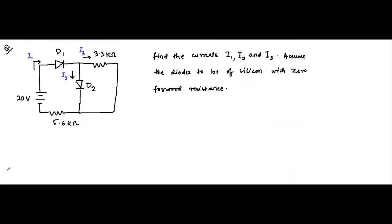Here we have another question on diode circuits. We have the circuit with diodes D1 and D2, which are silicon diodes with 0 forward resistance. We are asked to find the values of currents I1, I2, and I3. First we have to find the state of the diodes. After finding out their state, we will replace them with their equivalent circuit and then use network analysis techniques to find the currents.